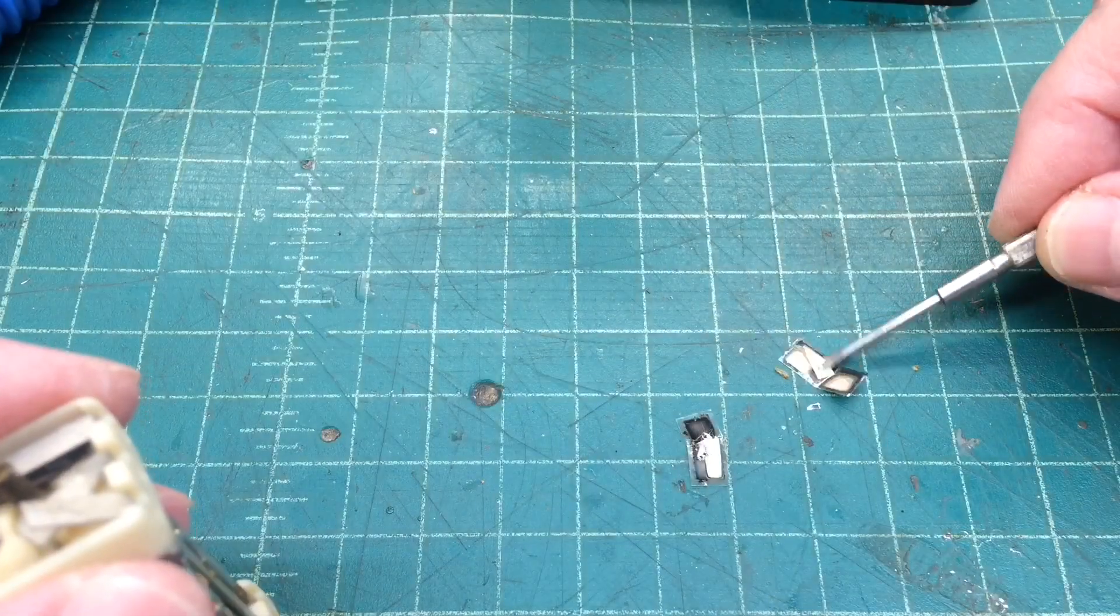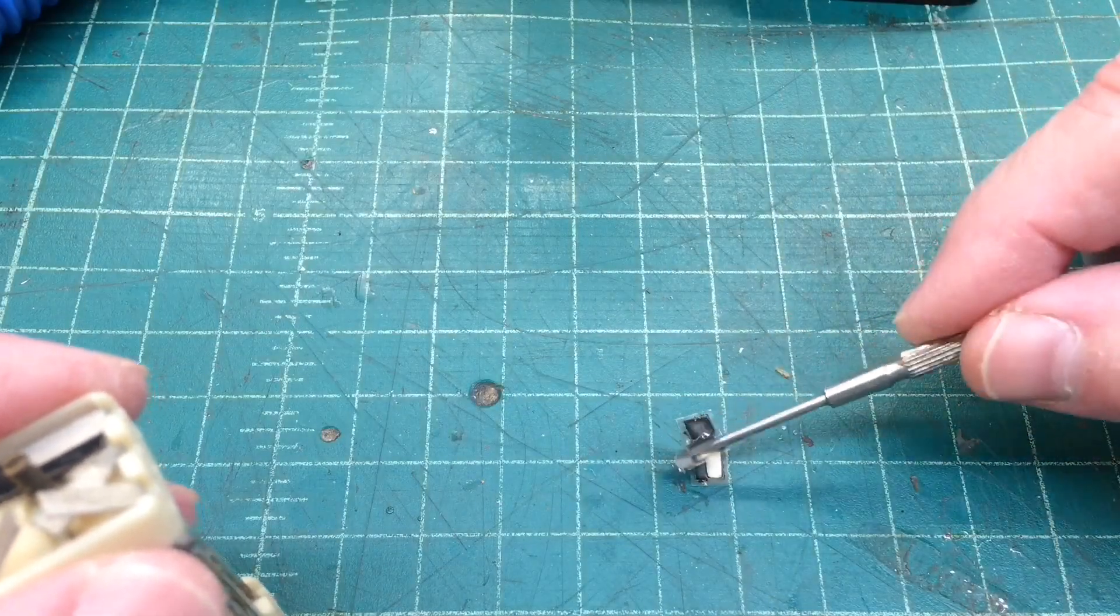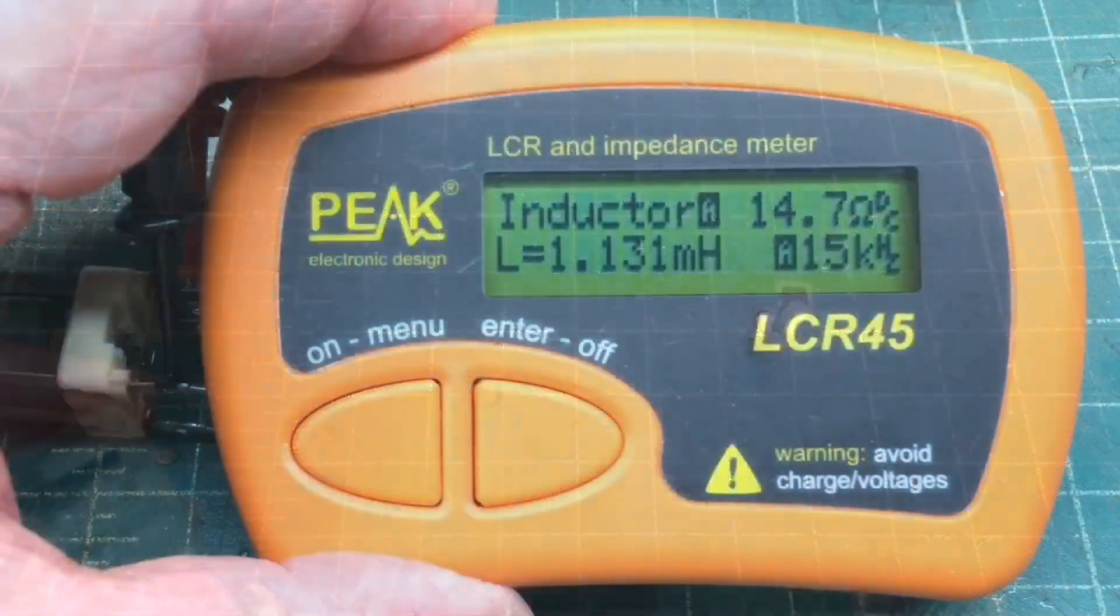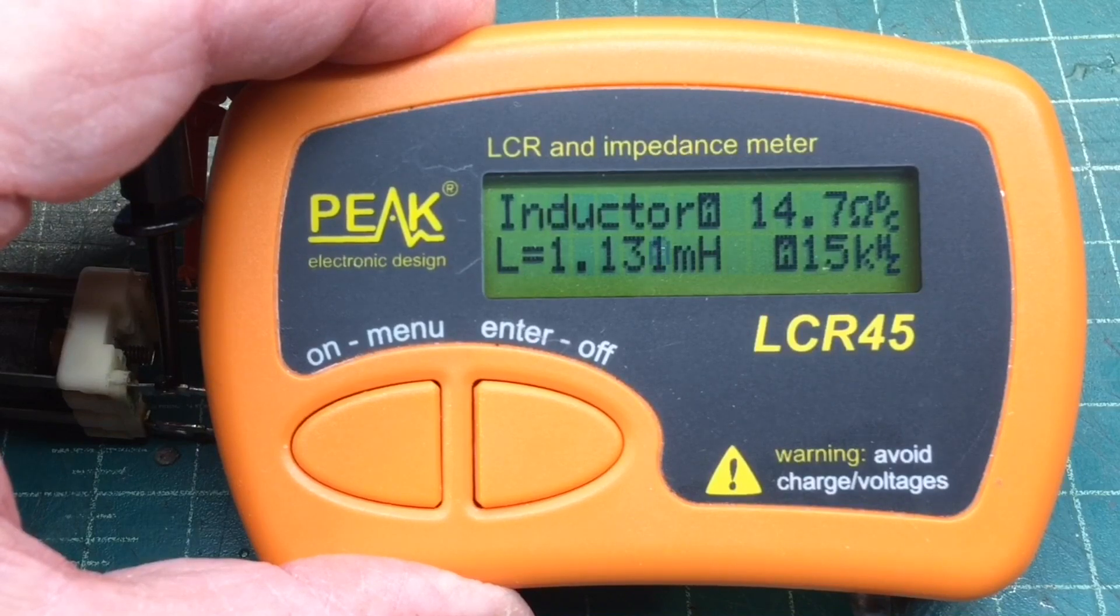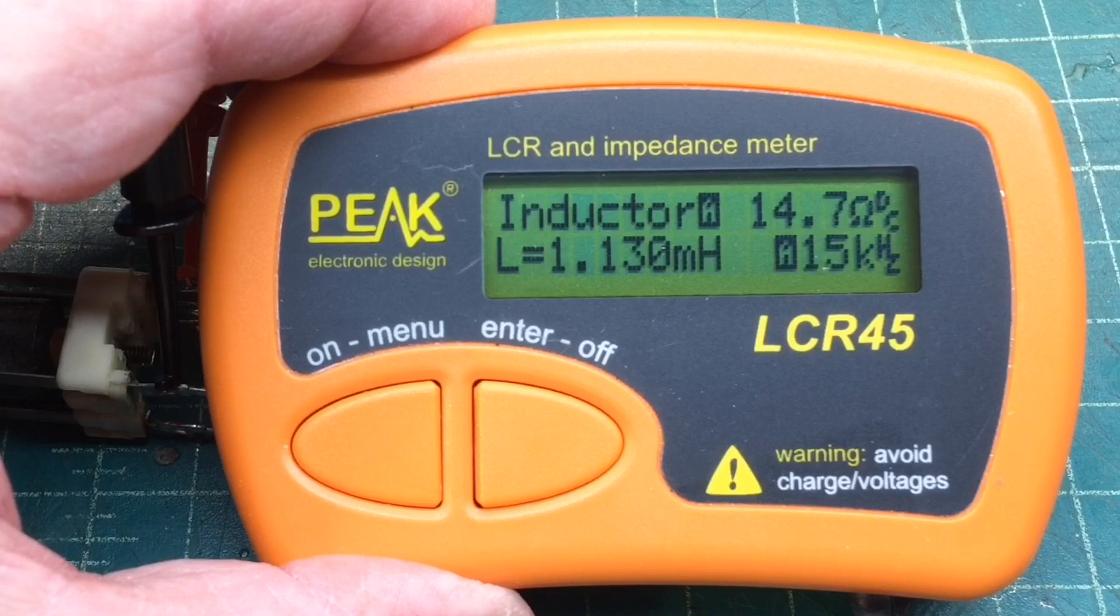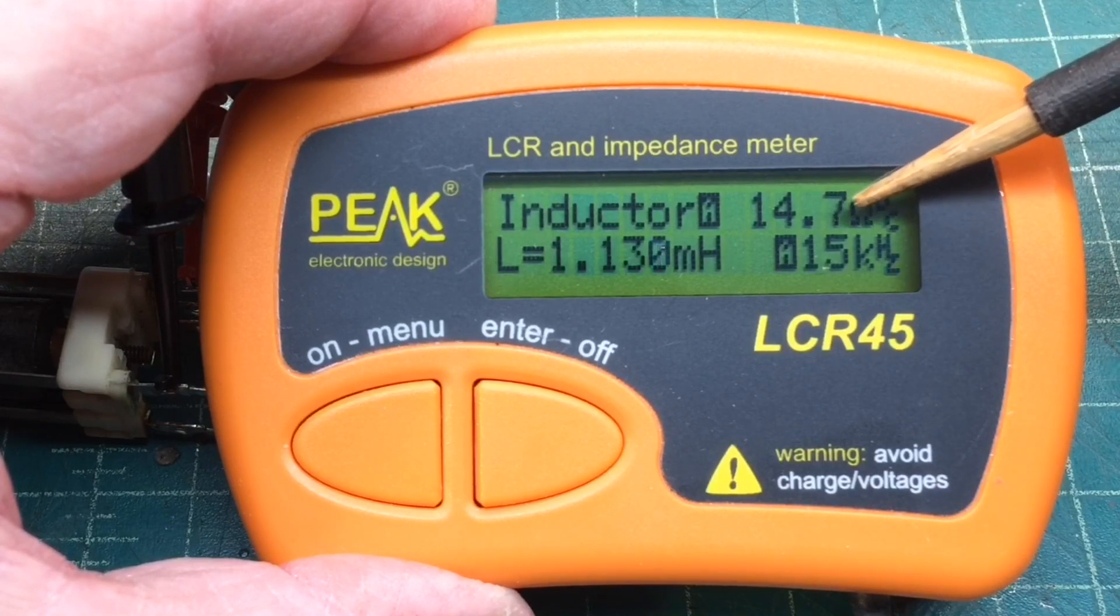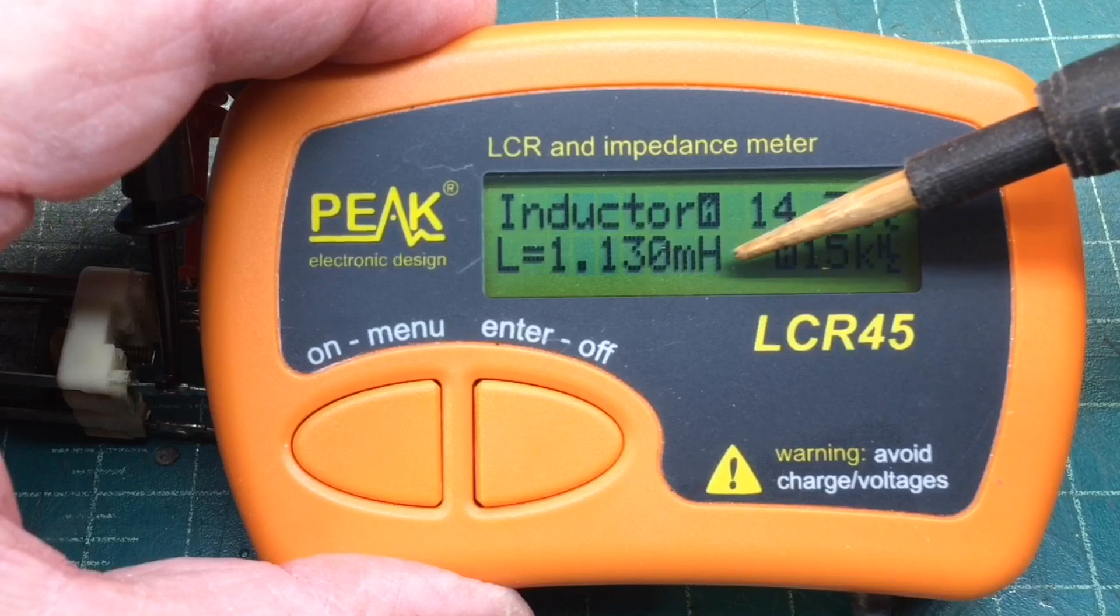And a close-up view here with that one side emptied out. And the discarded mica pieces here that were removed from that one section. And pulling out the LCR meter here, you can see the secondary side of the T2 at 14.7 ohms of DC resistance. And you can see we're just north of 1.1 millihenries.